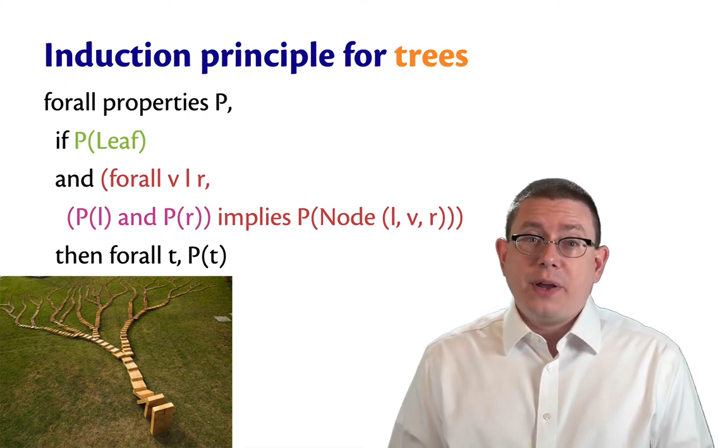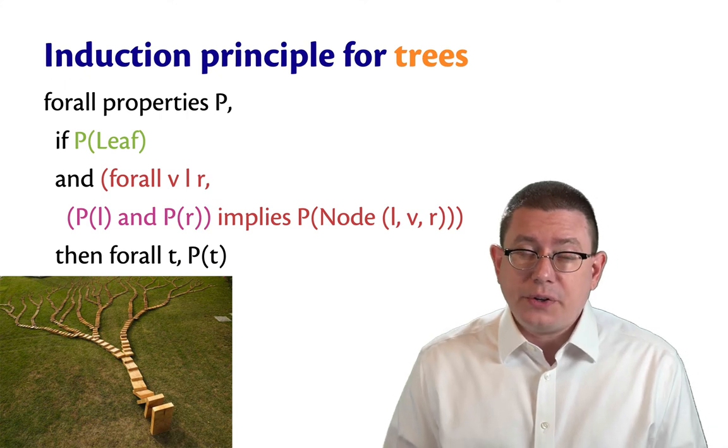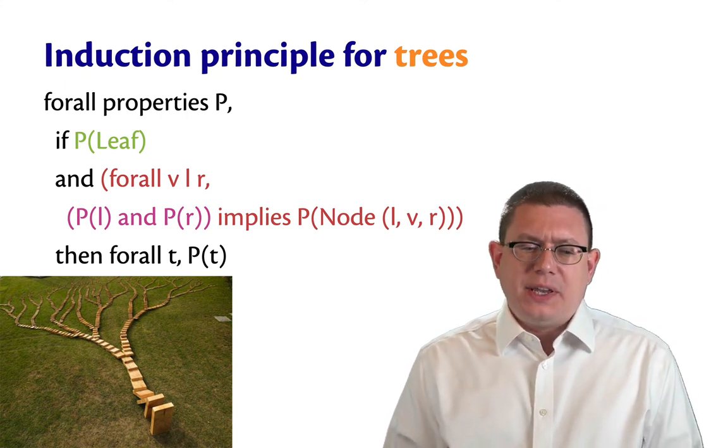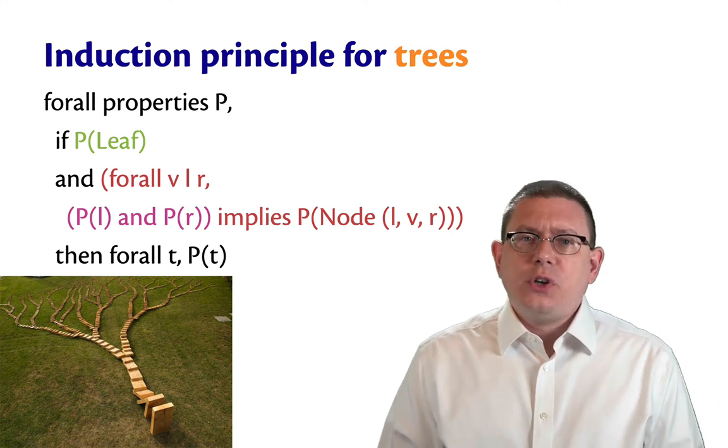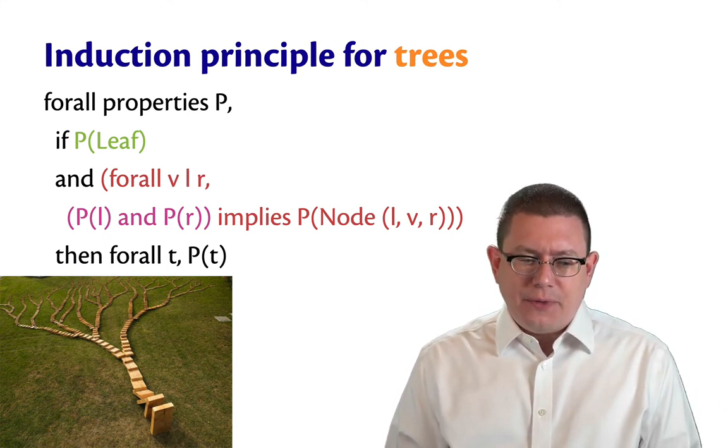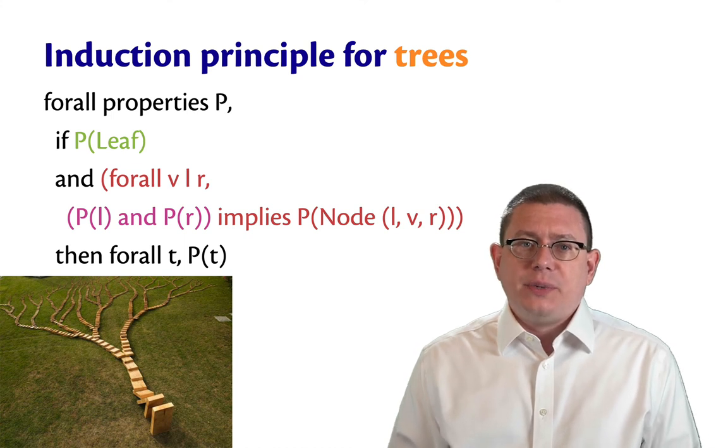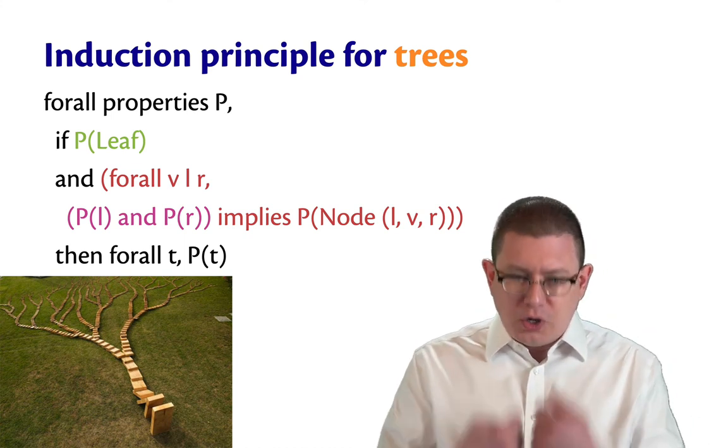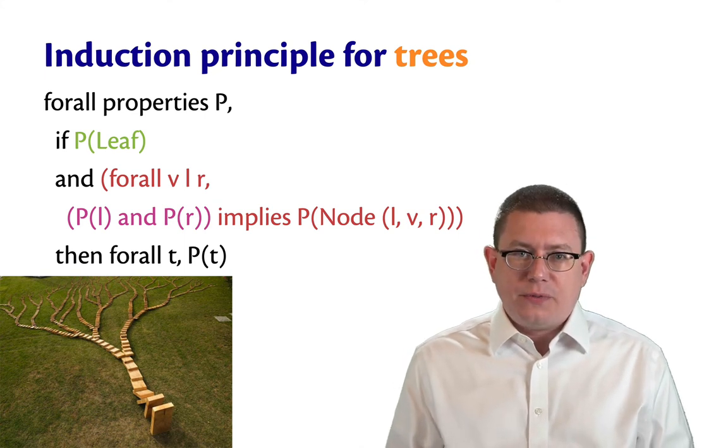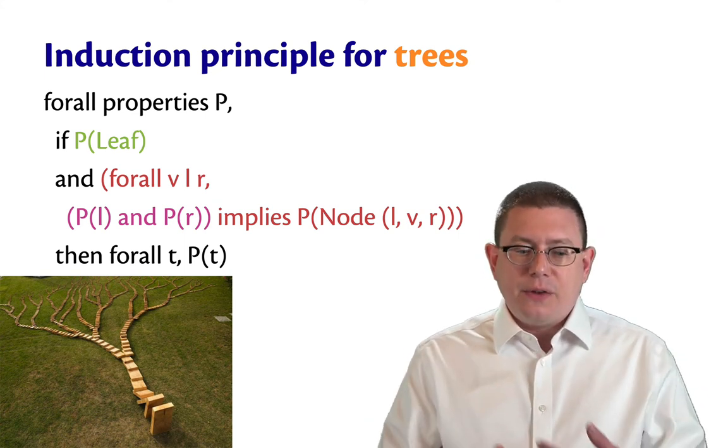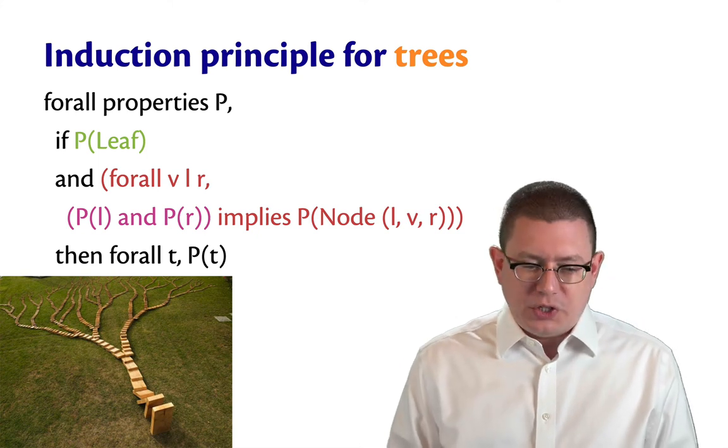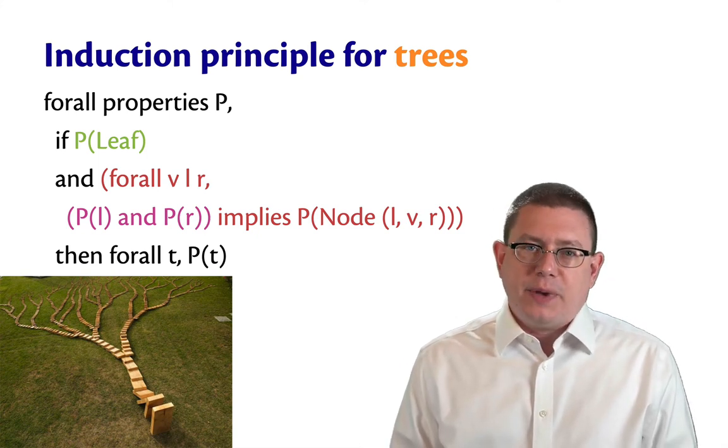So here the domino metaphor still applies. It's just a little harder to think about. The leaves are all the way back at the back of this picture, hard to see. But we're sort of saying that if you can knock over those leaves way there in the background, and if any time two branches of the tree come together and join up, if both of those fall, and therefore knock over the next domino that's at sort of the next branch up in the tree, then eventually we'll be able to knock over all of the dominoes in the tree, reaching the root, which is at the closest end to us in this picture.